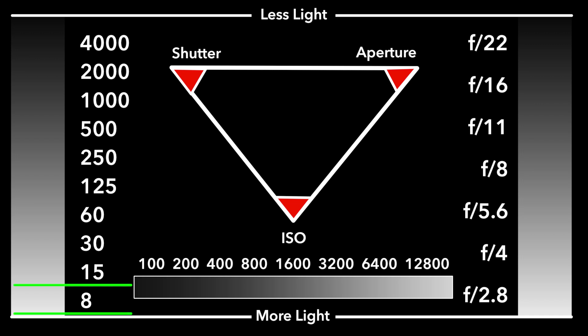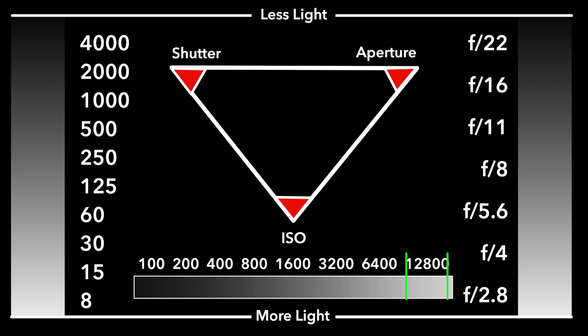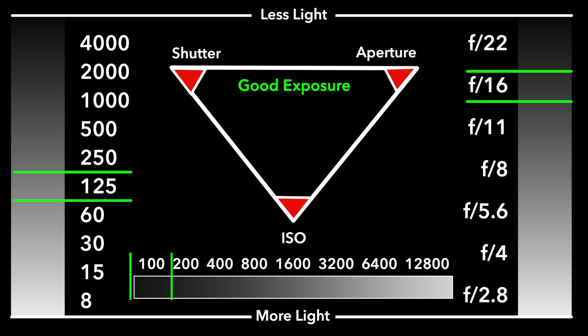Our shutter has different shutter speeds that let in more or less light depending on the speed. Our aperture value lets in more or less light depending on the opening. Our ISO gives us a sensitivity — essentially more or less light depending on the ISO value. For the sake of argument, let's say it's a nice sunny day and our camera is set to f16, shutter speed 125, and ISO 100 — a proper exposure at those settings. But we don't want to shoot at f16 because of depth of field, so we want to shoot at f2.8. Let's see how stops affect this.